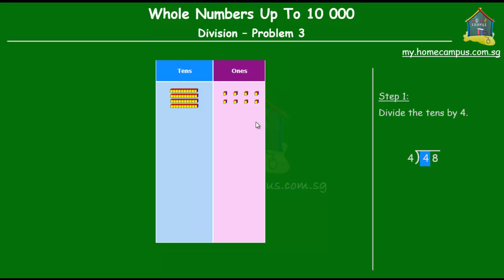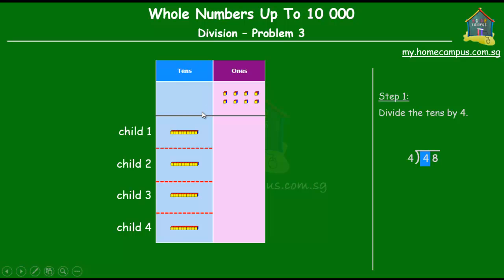Now the first step to division is to divide the tens by 4. We have 4 tens and we have 4 children. So each child obviously then gets 1 ten, right? 4 tens divided among 4 children gives 1 ten to each child.